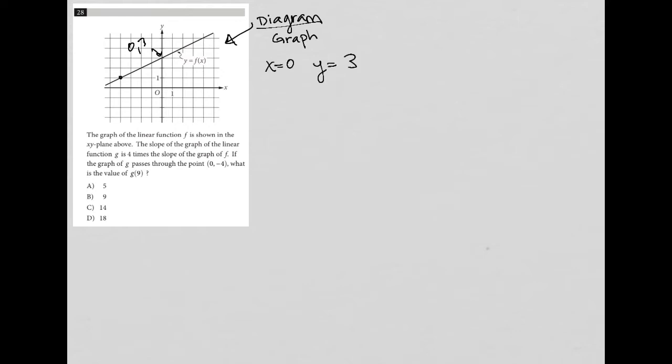There are some other points right along this line that I can identify if necessary. But let's read the question to see if the point (0, 3) is useful enough or if I need to identify anything else. The question says: the graph of the linear function f is shown in the xy-plane above. The slope of the graph of the linear function g is 4 times the slope of the graph of f.